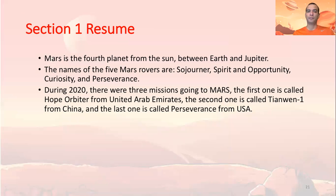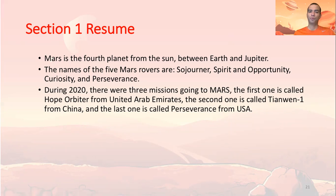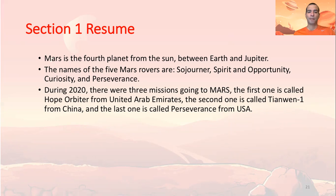To finish this session, we need to review the details. The first point is that Mars is the fourth planet from the sun, between Earth and Jupiter. The names of the five Mars rovers are Sojourner, Spirit and Opportunity, Curiosity, and Perseverance. During 2020, there were three missions going to Mars: Hope Orbiter, Tianwen 1, and Perseverance. You can check all of these details in our material. We will see you in the next section.